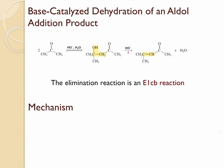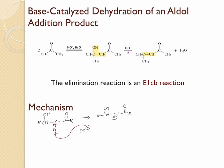Let's take a look at the mechanism for the base-catalyzed dehydration of the aldol addition product. Here we have a beta-hydroxy ketone. The first thing we have to do is deprotonate the alpha hydrogen, for which we use a base. The base grabs this hydrogen, pushing those electrons onto this carbon, thereby forming the enolate ion. Once the enolate ion is formed, it can be resonance stabilized — here is the resonance contributor.